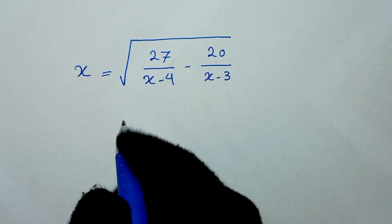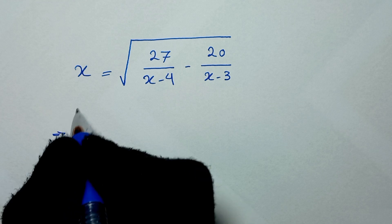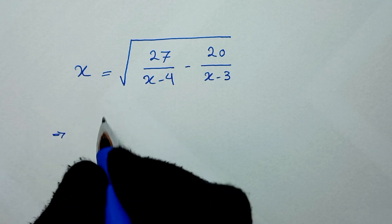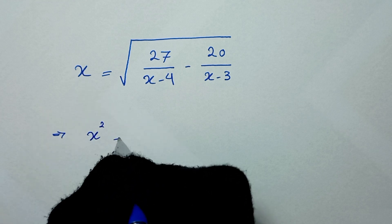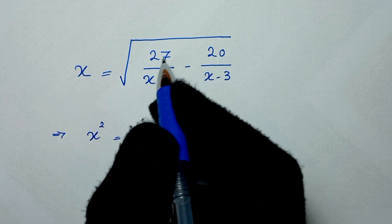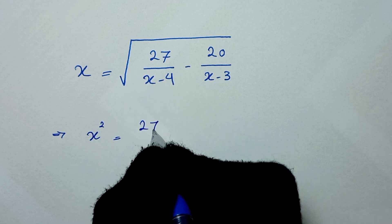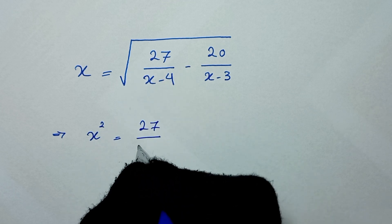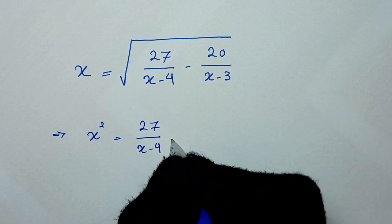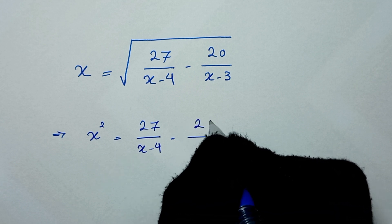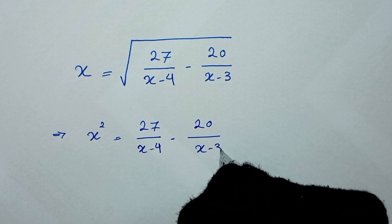In the first step, we start by squaring both sides of the equation. It will be x squared, and the square will cancel on the right side, giving us 27 over x minus 4, minus 20 over x minus 3.